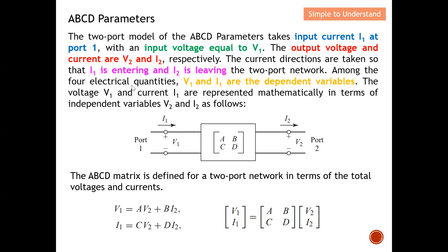Among the four electrical quantities, V1 and I1 are the dependent variables, while V2 and I2 are the independent variables. From this equation, you can see that V1 is actually dependent on V2 and I2. V1 needs to rely on V2 and I2 in order to obtain its value.